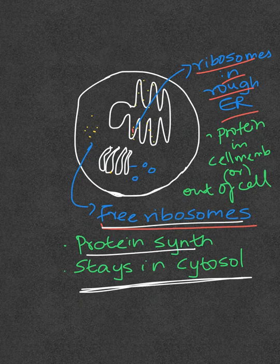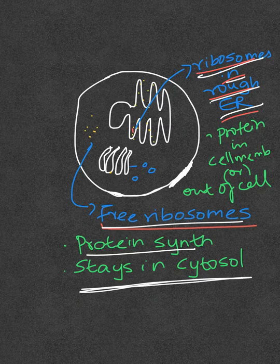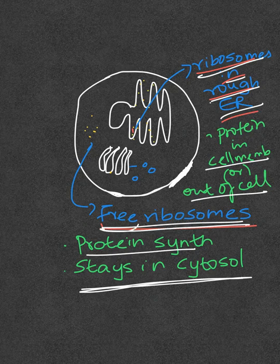Whereas the proteins synthesized by the ribosomes in the rough endoplasmic reticulum form proteins in the cell membrane — such as transport proteins — or they go out of the cell. So the major difference is that free ribosome proteins stay inside the cell, while rough ER ribosome proteins are destined for the cell membrane or secretion.